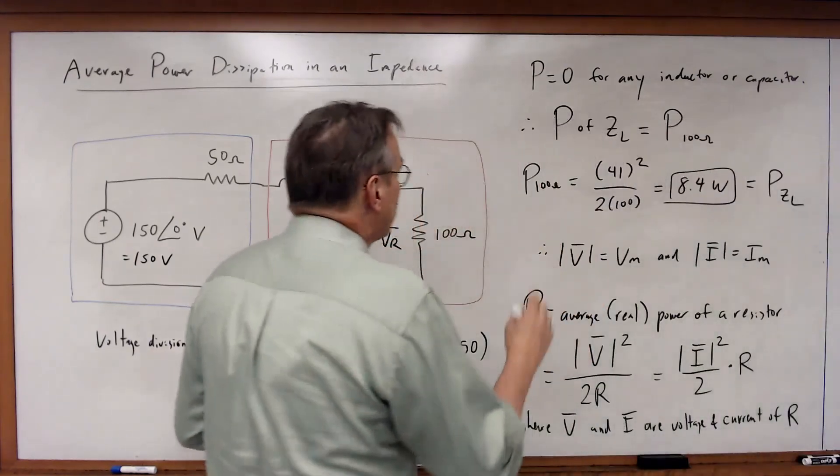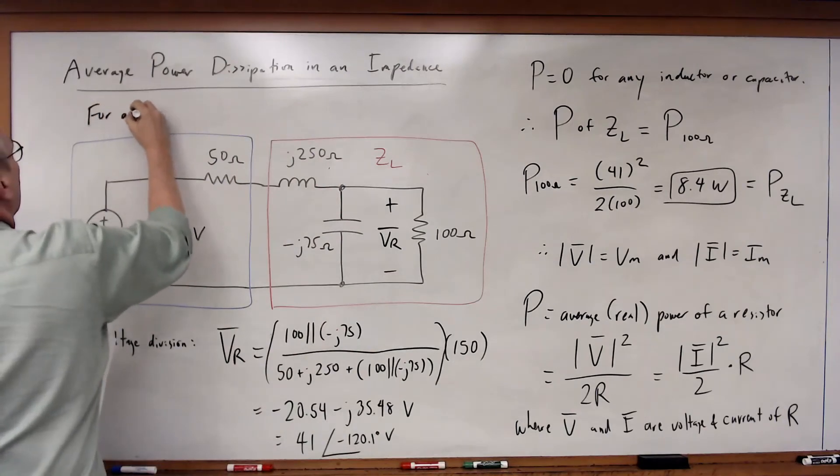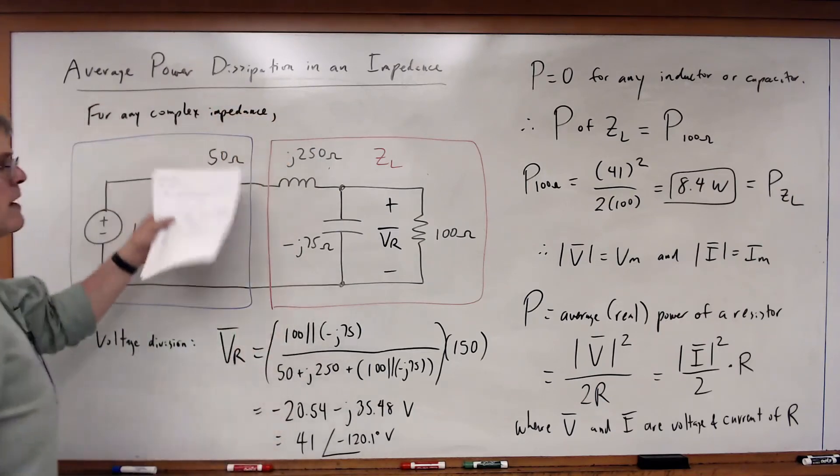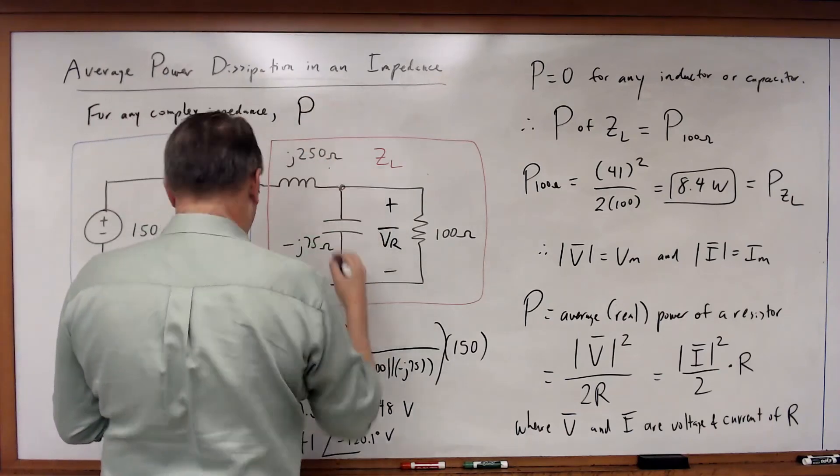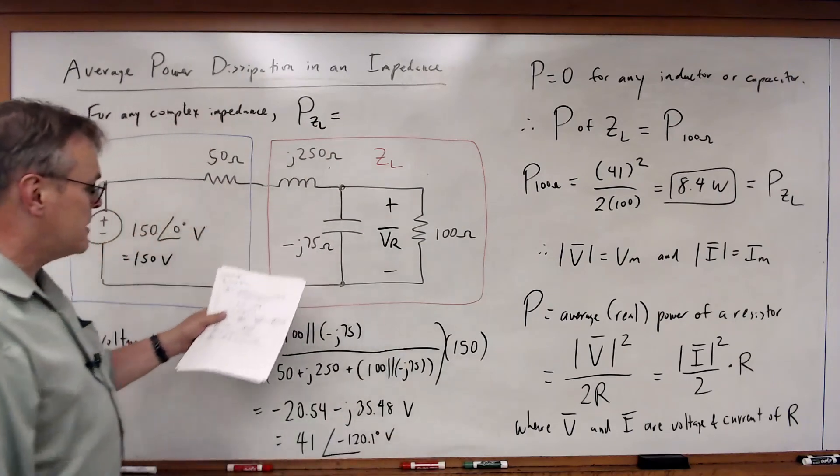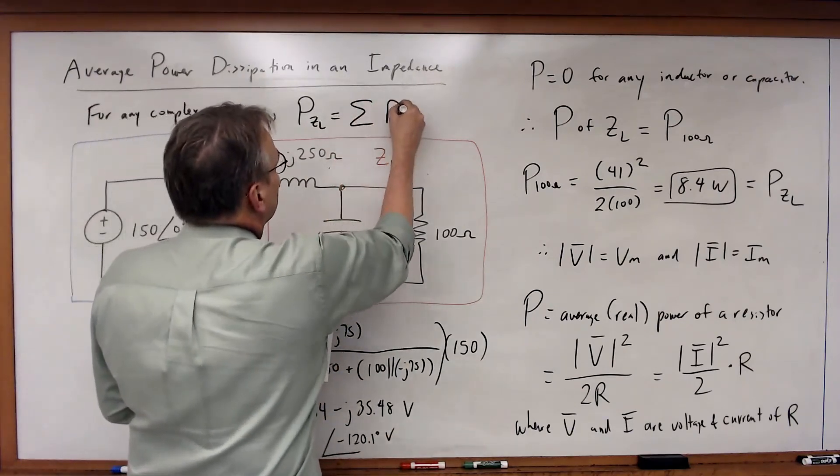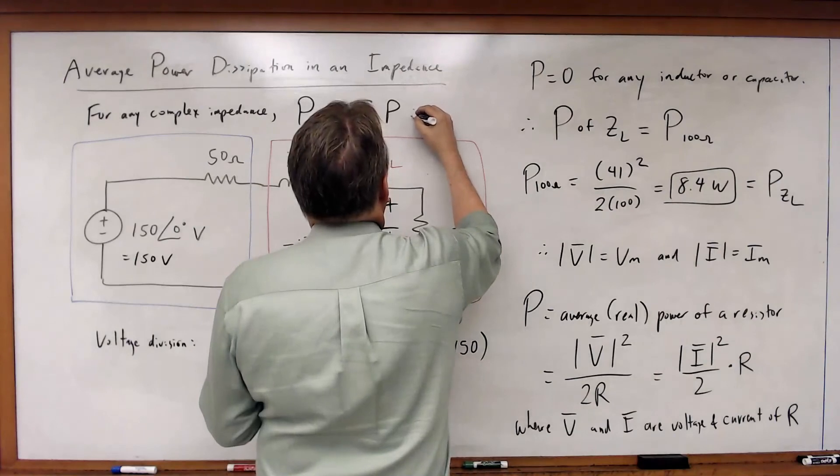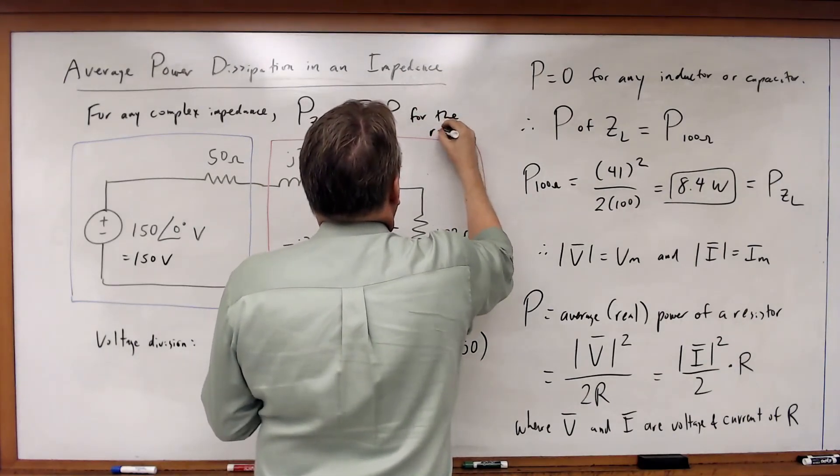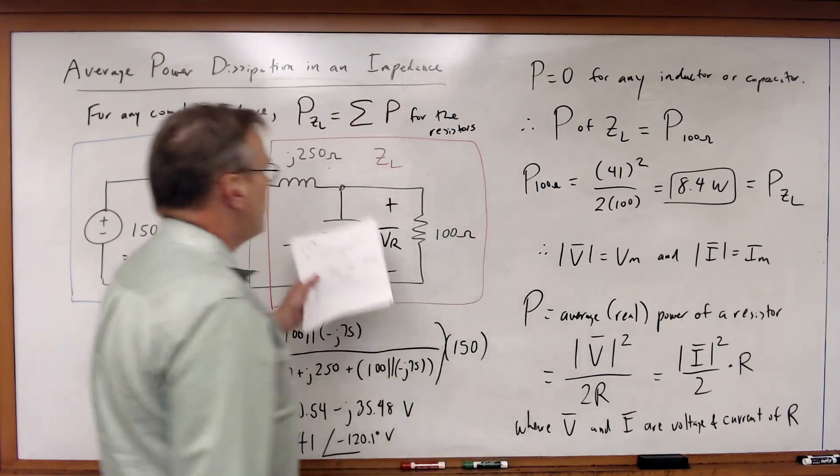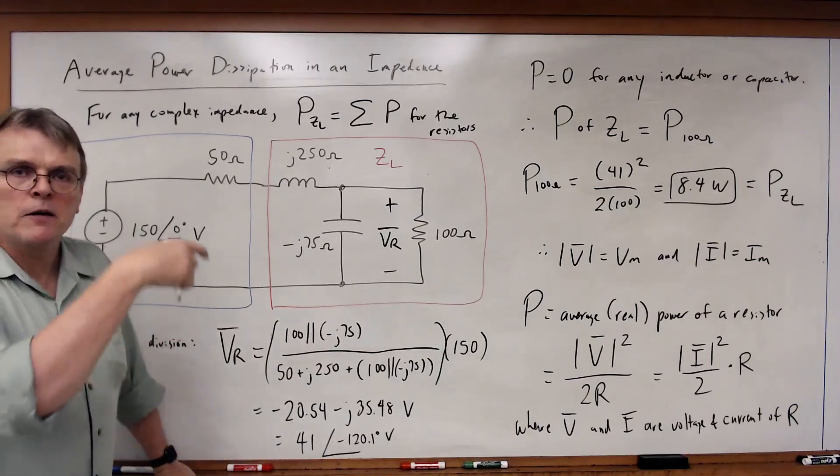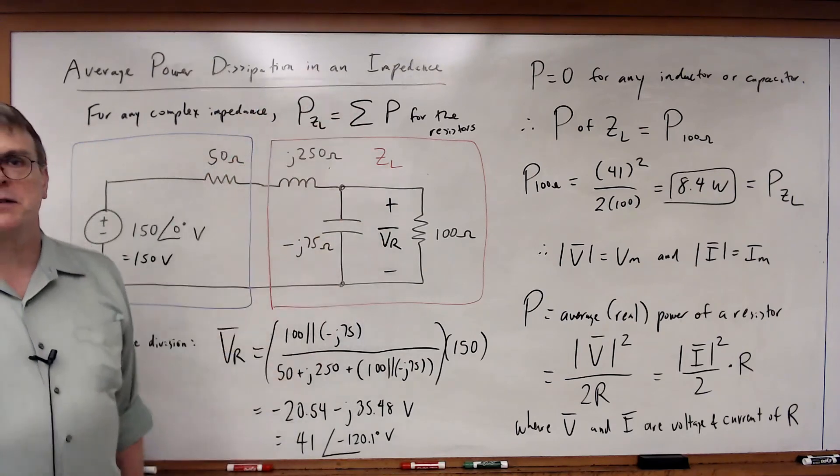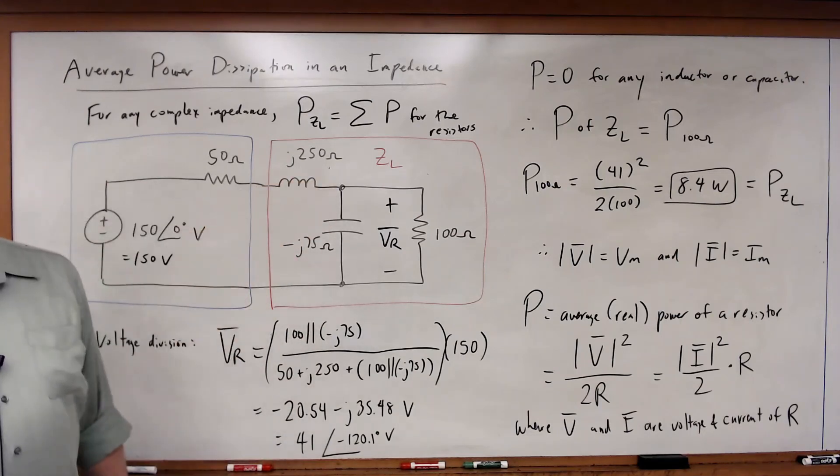For any complex impedance, and hopefully this should be obvious to you, the power of that complex impedance must simply be equal to the sum of the power of all of the resistors in that impedance. So if I'd had additional resistors in this load, I would simply have calculated the voltage phasor or current phasor for each of them and then simply added together all of the real powers. That would have given me the total real power of that complex impedance or that load.